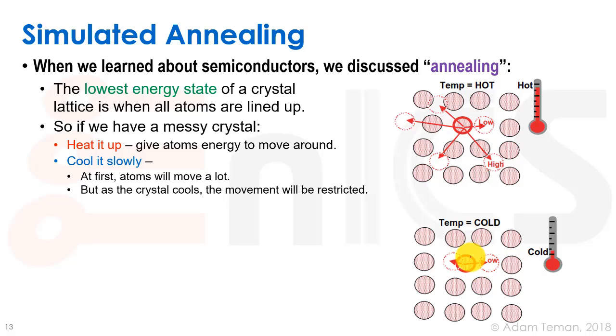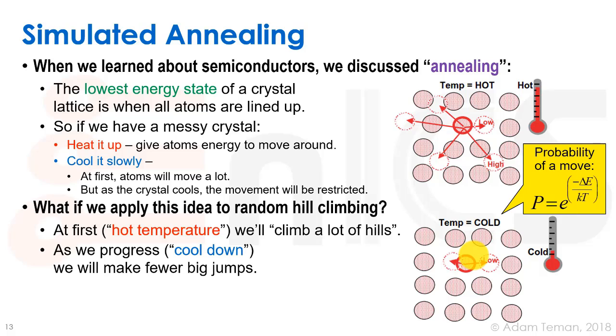This is the idea that we take to our simulated annealing algorithm, to our random iterative placement or random hill climbing. What we do is we take the probability of a move that comes from physics, where the probability is e to the power of minus the change in energy divided by kT.